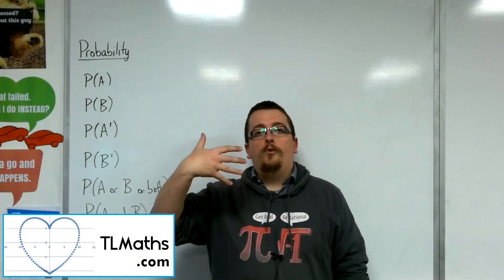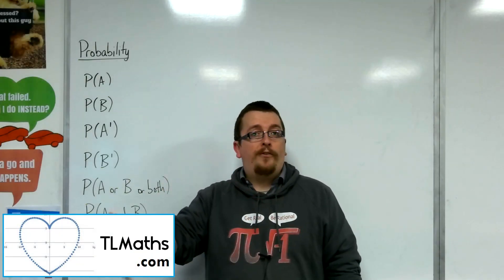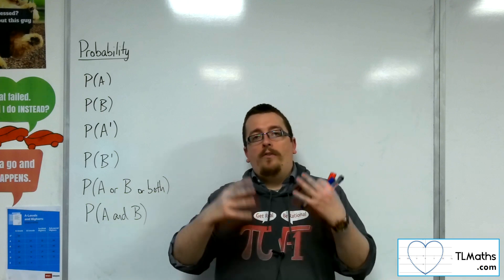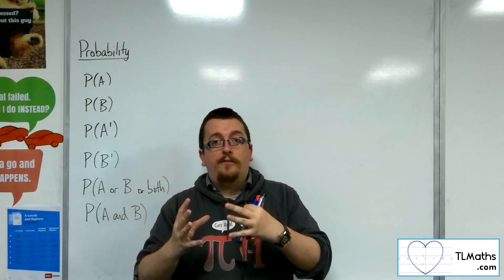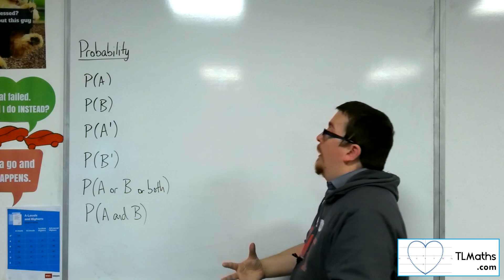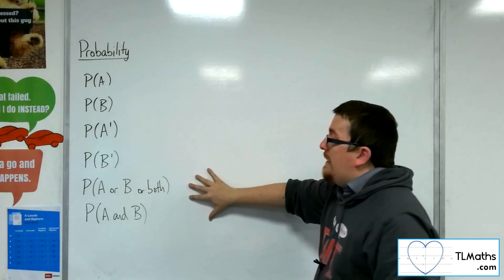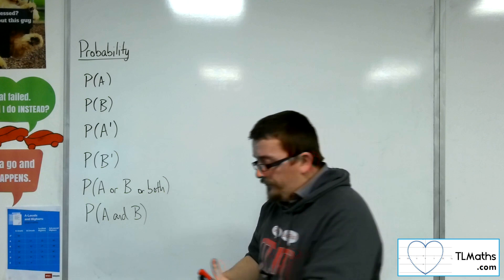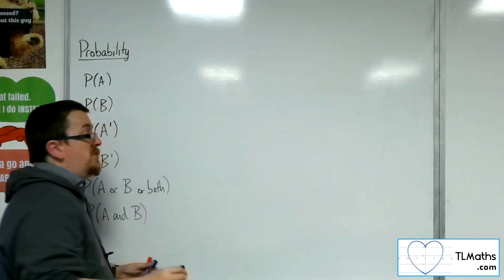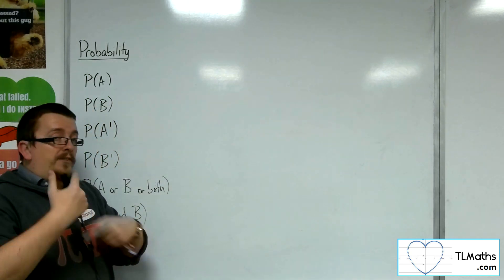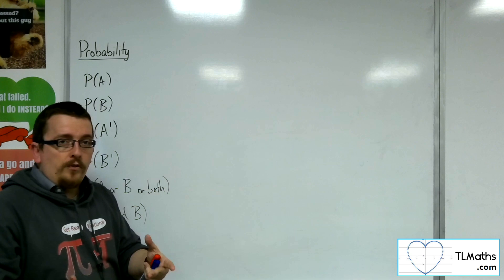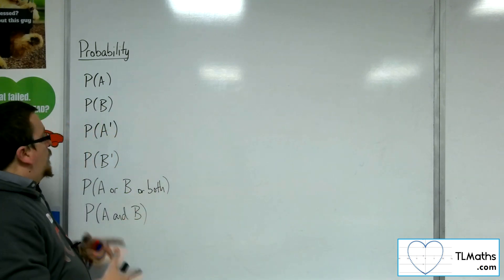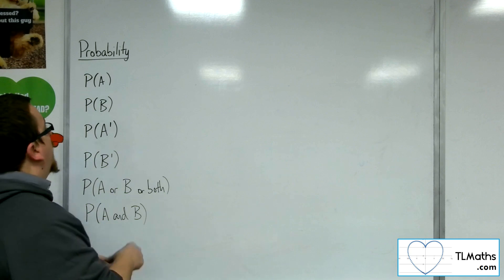In this video, I want to introduce or reintroduce you to Venn diagrams, and really what I want to do is be able to identify the regions that are identified by these probabilities here. A Venn diagram that consists of two events—now it doesn't just have to have two events, it can have three or more depending on how it can be drawn. We're just going to look at two events in this case.